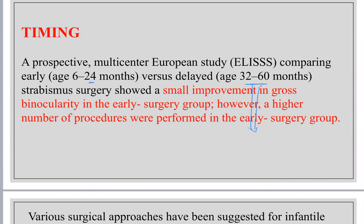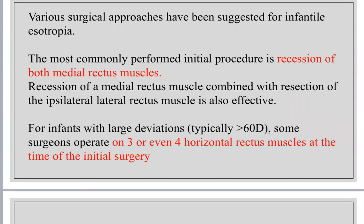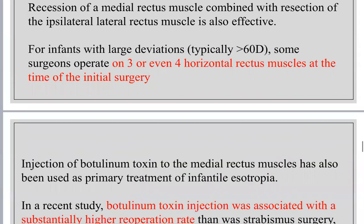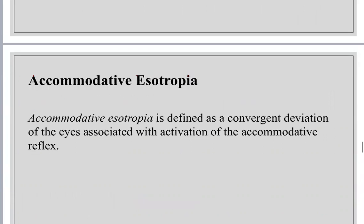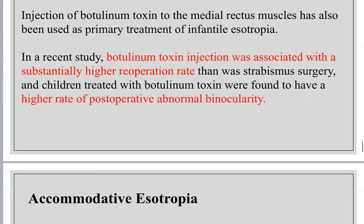When we do surgery, we start with recession of both medial rectus muscles. If the angle is large, we can operate on three or even four horizontal rectus muscles. Botox can be used to delay surgery, but it is temporary and is not recommended in most cases because it has a higher rate of post-operative abnormal binocularity.